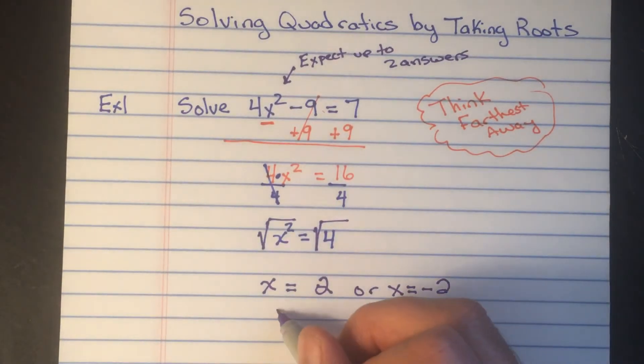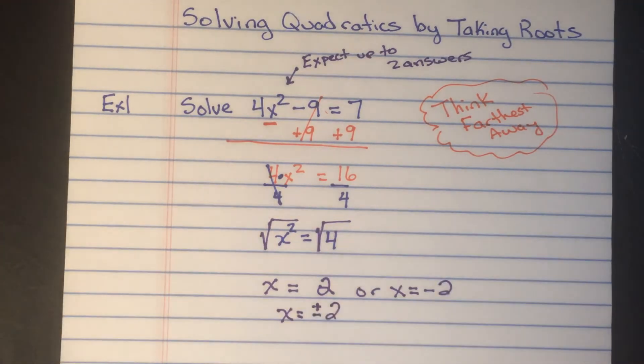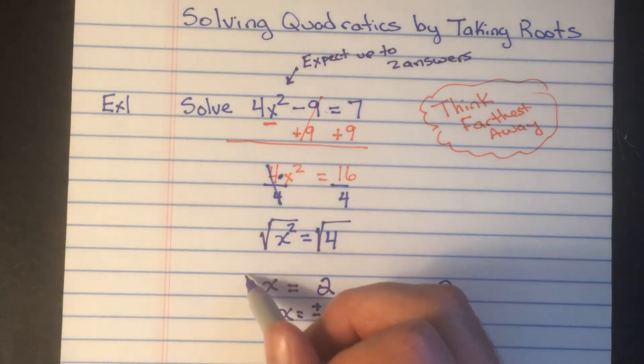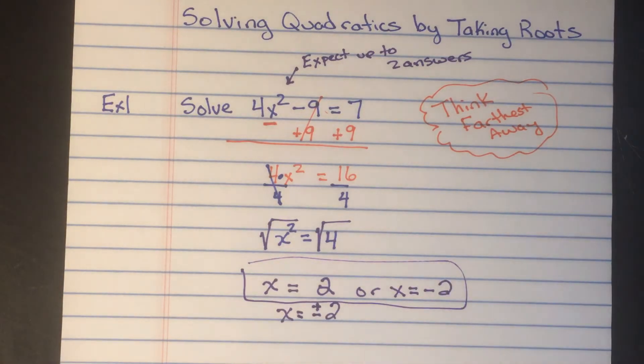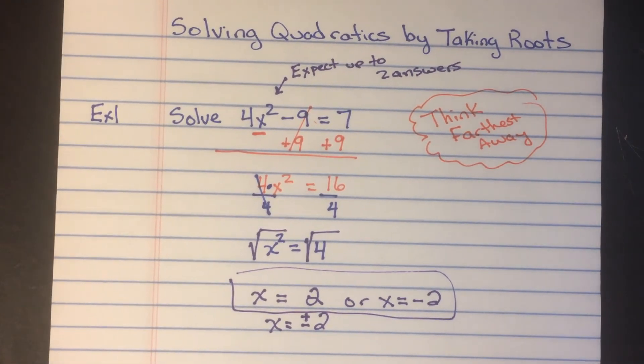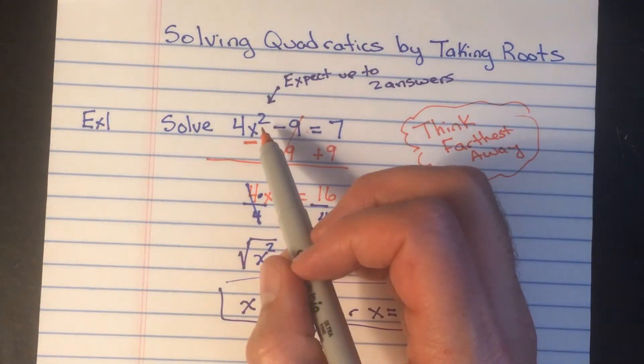And sometimes they use this symbol here that looks like a plus with a minus right underneath it, just saying it could be positive or negative two. You'll see it both ways but our answers are either two or negative two. And you can write it with the plus or minus sign if you like. So hopefully today's solving makes a little more sense because it looks more like what you're used to. We want to get x by itself.